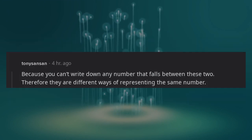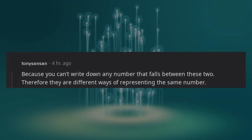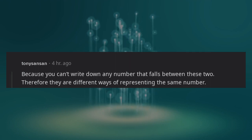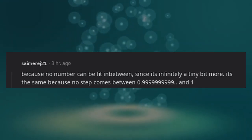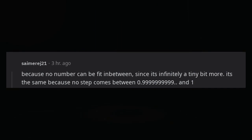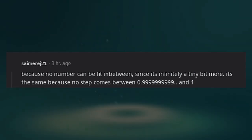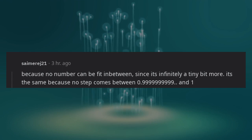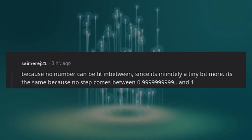Because you can't write down any number that falls between these two, therefore they are different ways of representing the same number. Because no number can be fit in between, since it's infinitely a tiny bit more. It's the same because no step comes between 0.9999999999 repeating and 1.